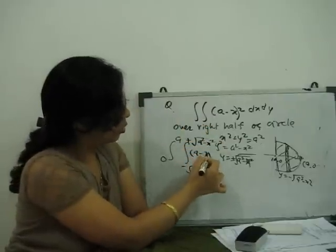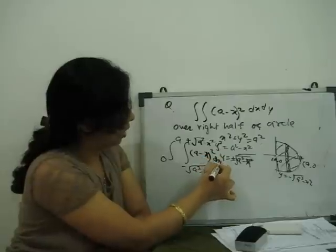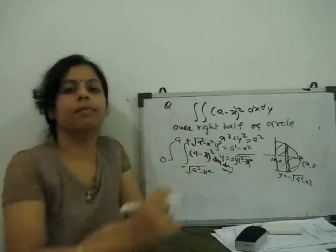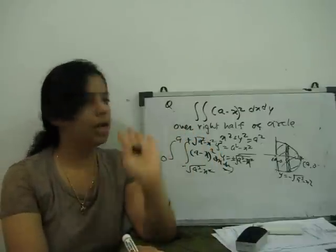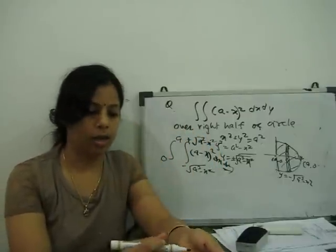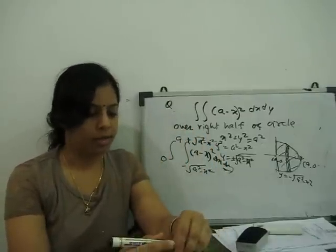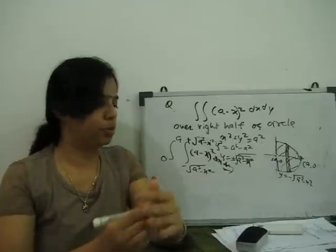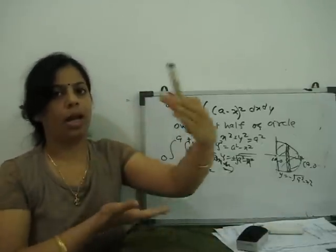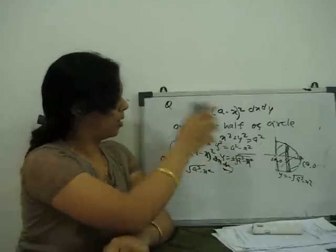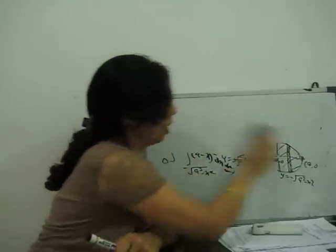A minus x whole square dx dy. So first we integrate with respect to y, apply the limits and solve for x. One more example. I will take you one example from ellipse. Some for parabola, ellipse, so many questions. Parabola and line, ellipse and line. Now these are examples for circle. Some more examples.